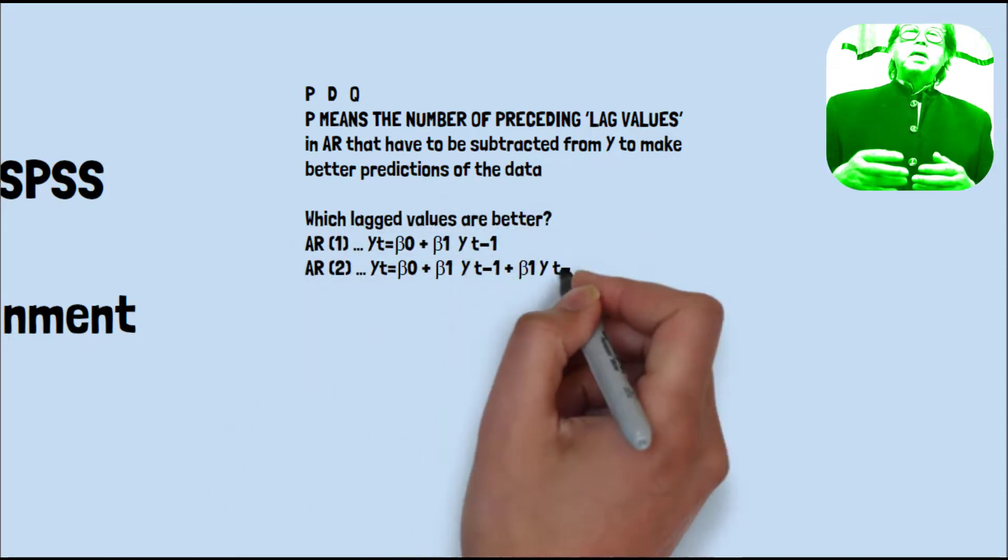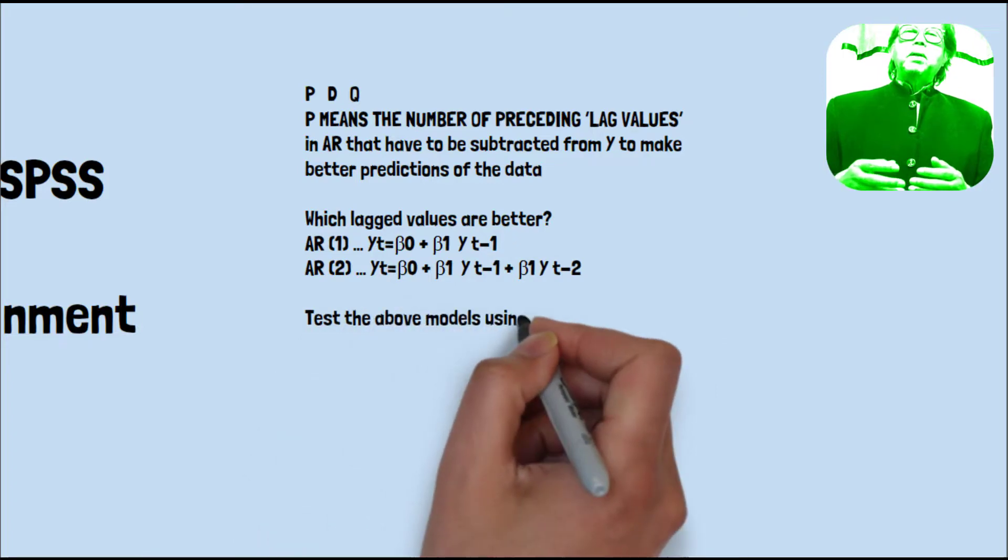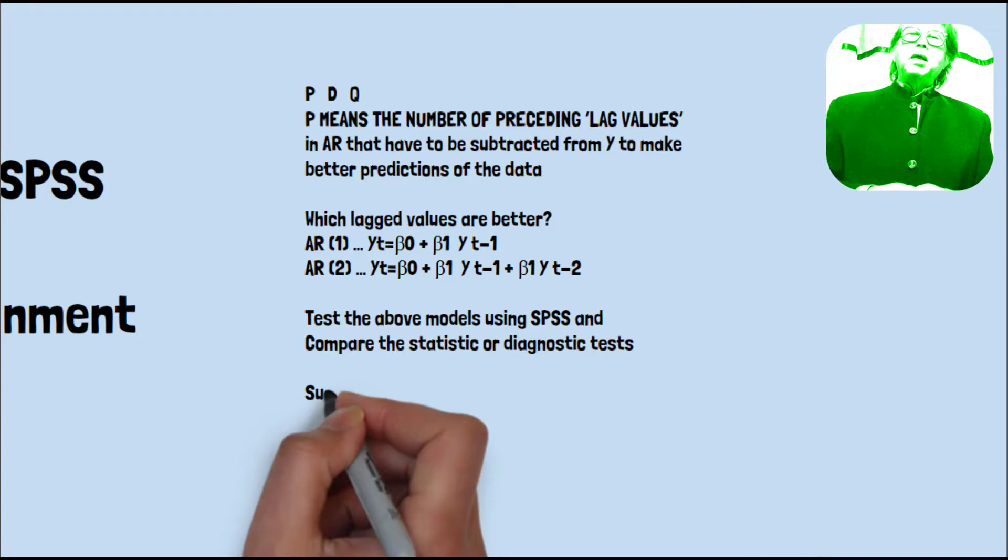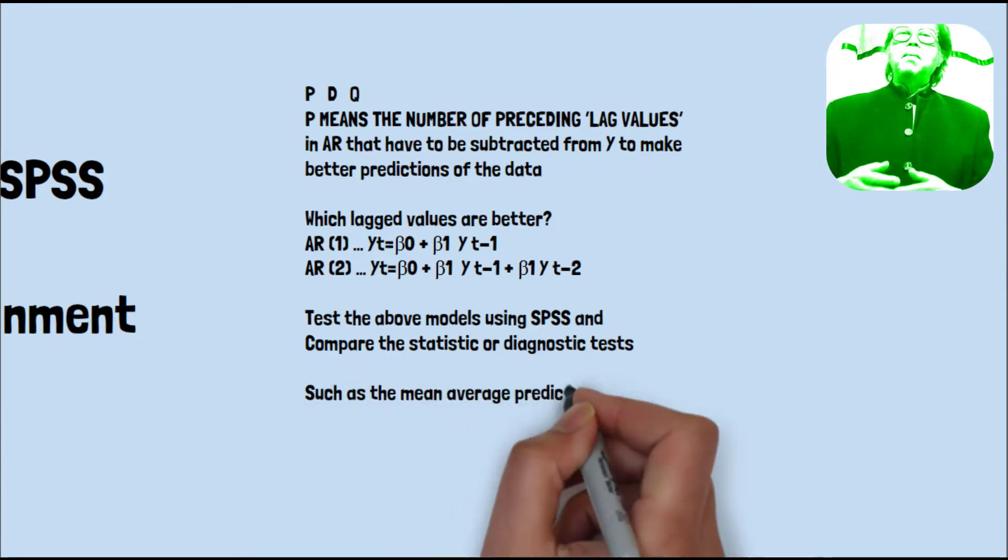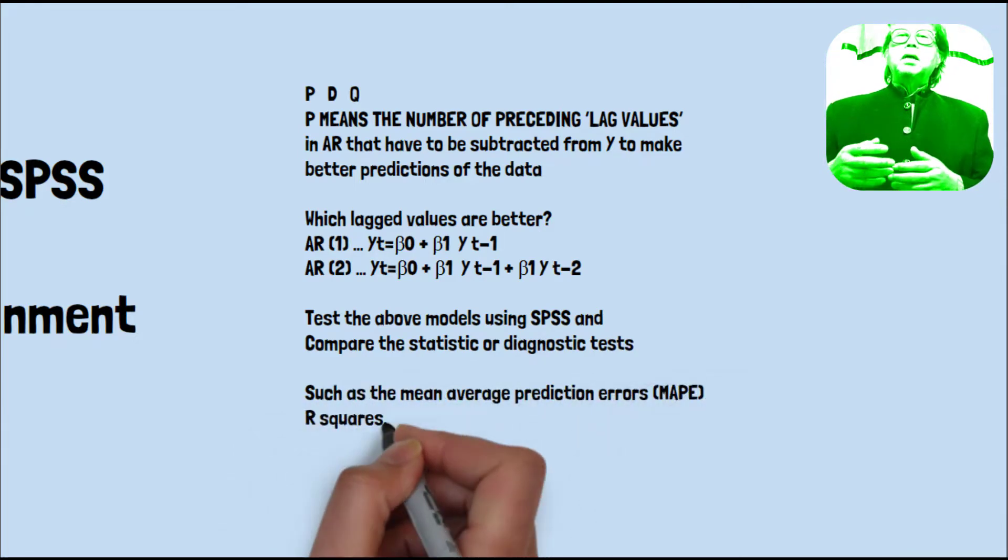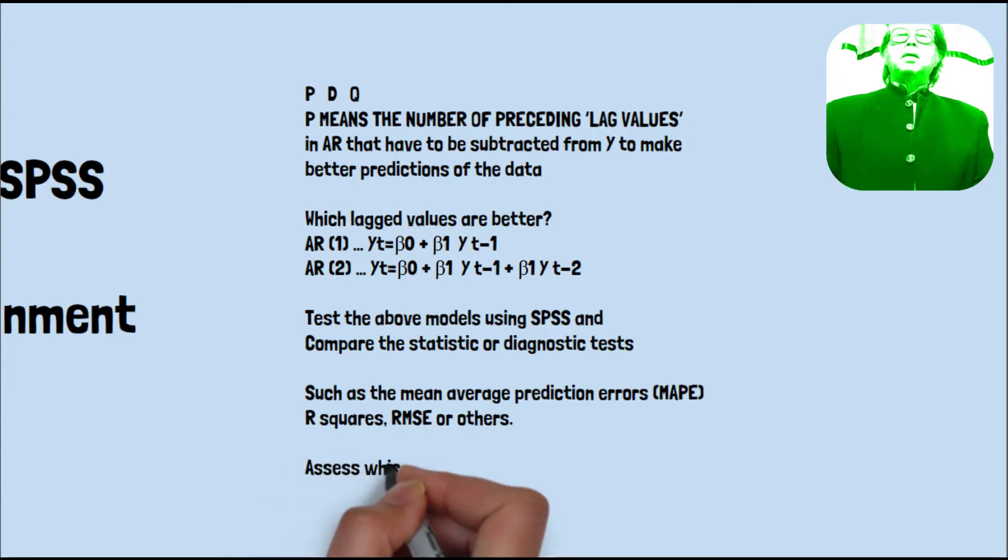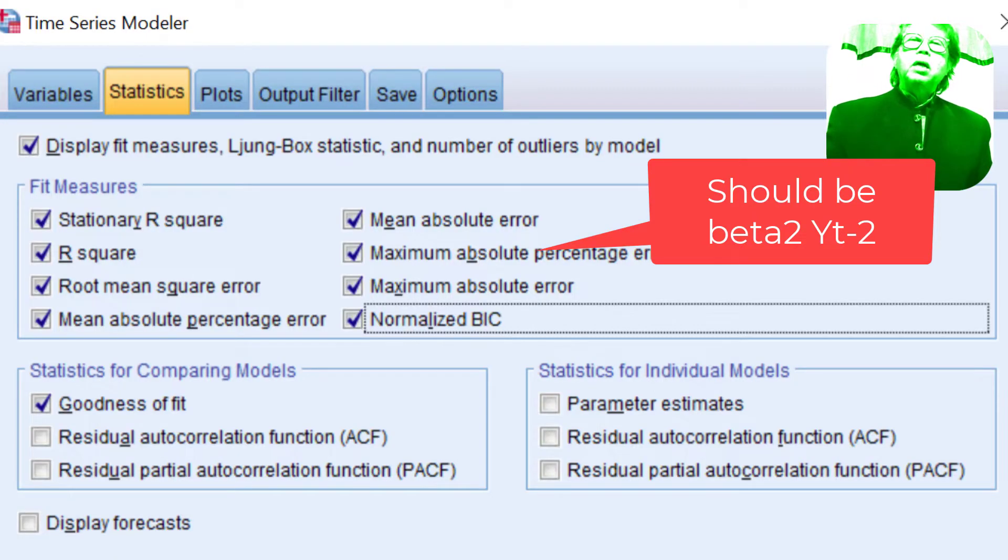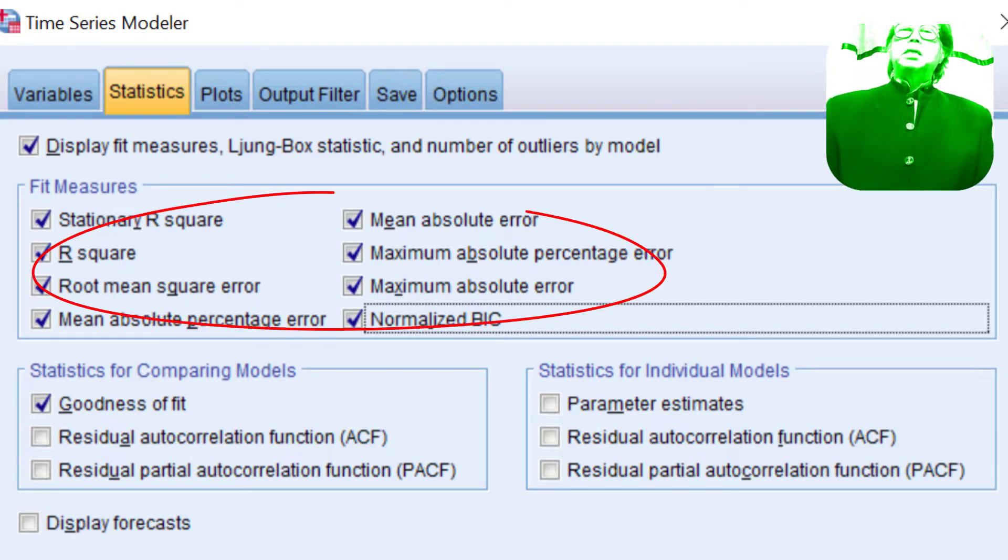Autoregressive 1: yt = beta 0 + beta 1 yt minus 1. Or autoregressive 2: yt = beta 0 + beta 1 yt minus 1 + beta 2 yt minus 2. For other autoregressive models, you need to test all the above models using SPSS and compare the statistic or diagnostic test.